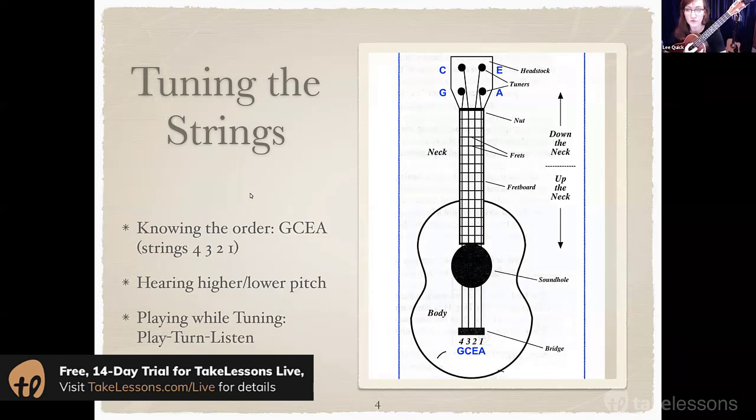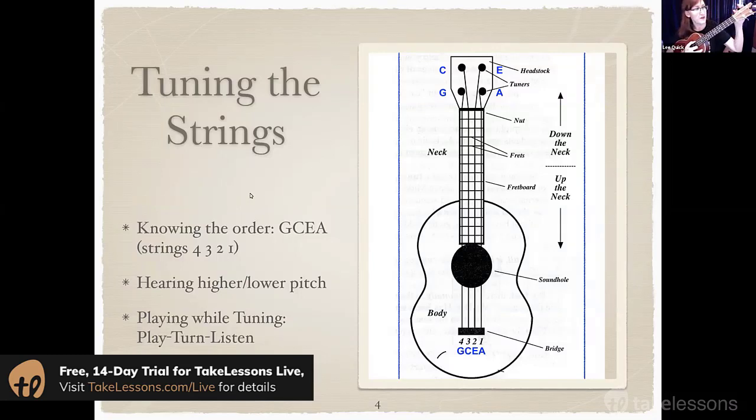Now of course if you have an electronic tuner, this makes it super easy. You just keep turning until you get a green light. If you go too far, just come back up the other direction.